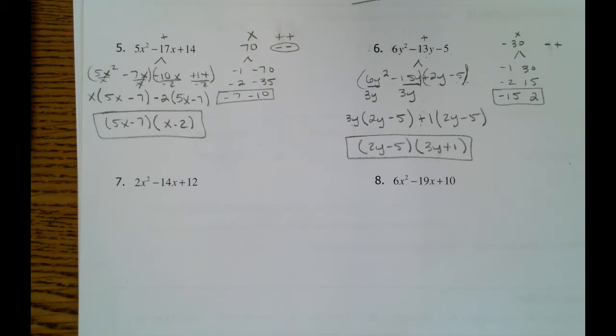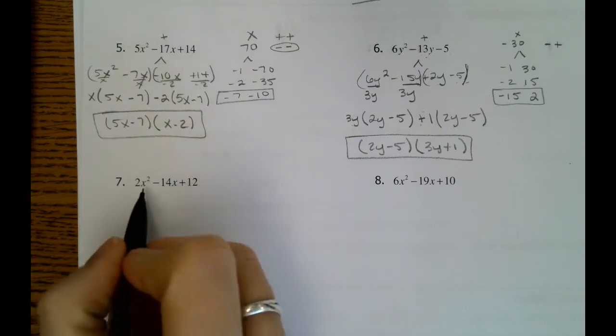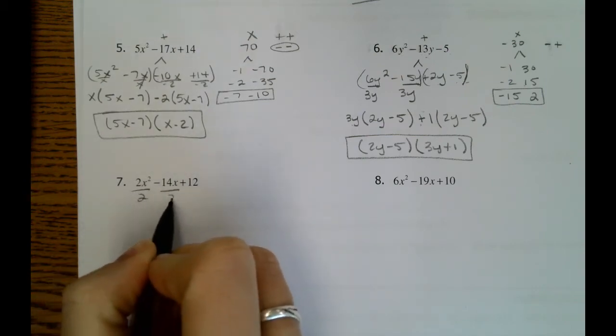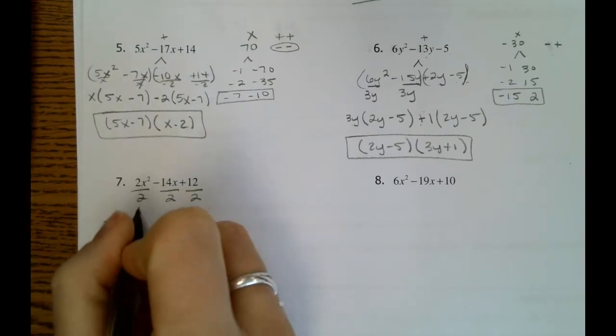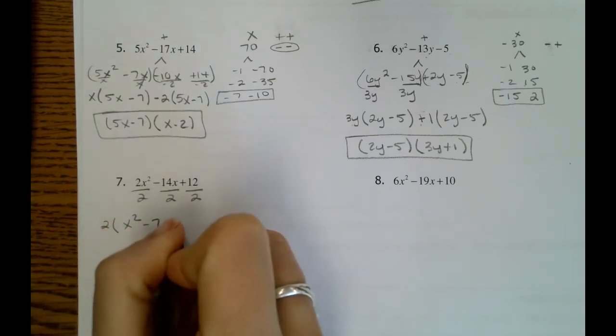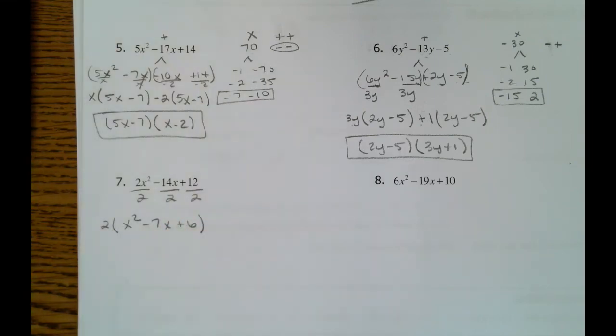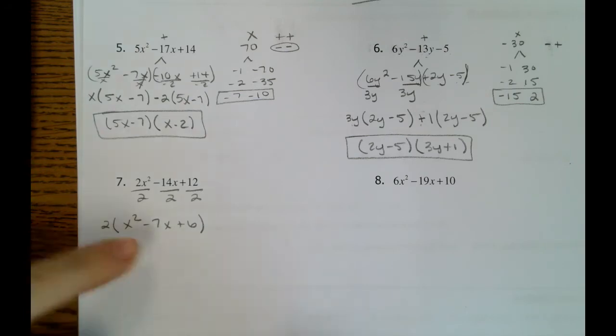Number 7. 2, 14, and 12. Hopefully you see that these have a GCF of 2. So we're going to factor out our GCF. Now we're going to do split the middle with the inside terms.